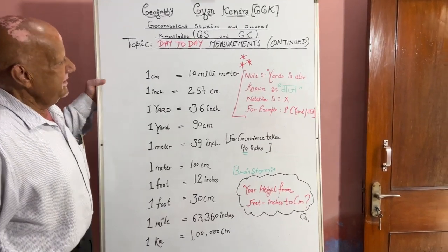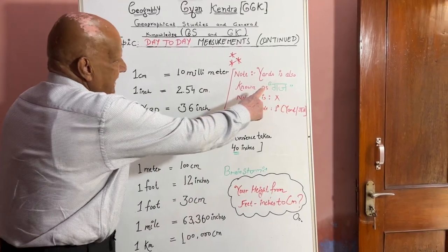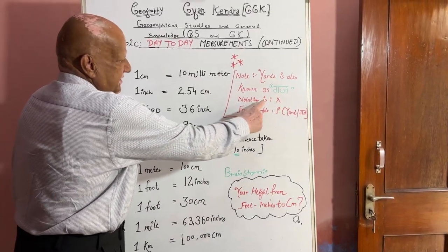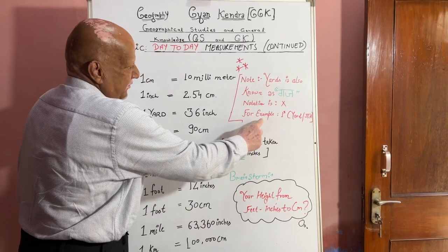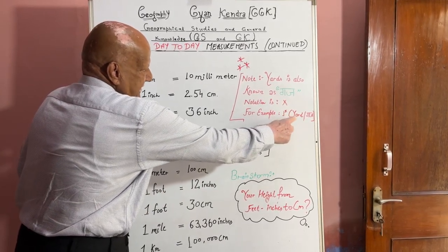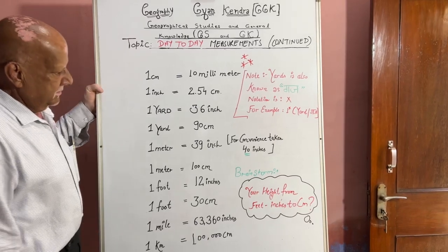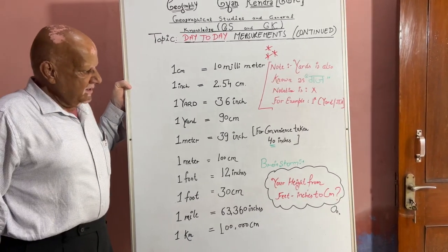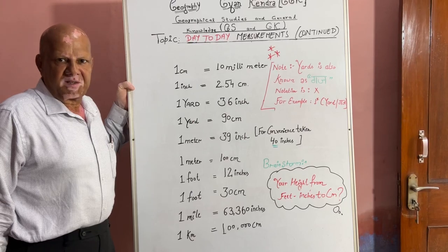Notation is yard, also known as 'gus'. Notation is cosine. For example, 1 yard is equal to 1 yard gus. In addition, for the respondent, align and measure your height from feet and inches to cm.